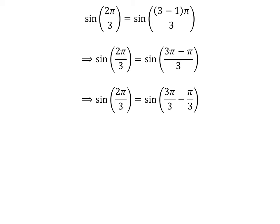The fraction 2 times pi upon 3 can be expressed as the difference of two fractions, 3 times pi upon 3 and pi upon 3. Cancelling out the common factor in the numerator and denominator gives us sine of 2 times pi upon 3 is equal to sine of pi minus pi upon 3.